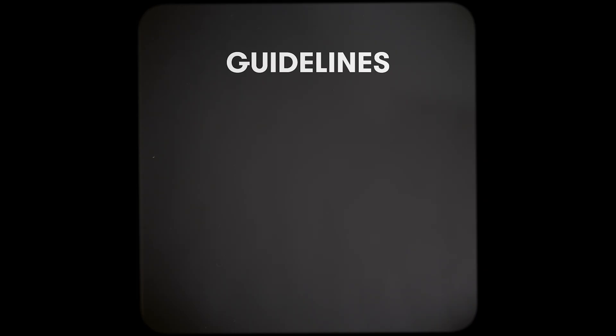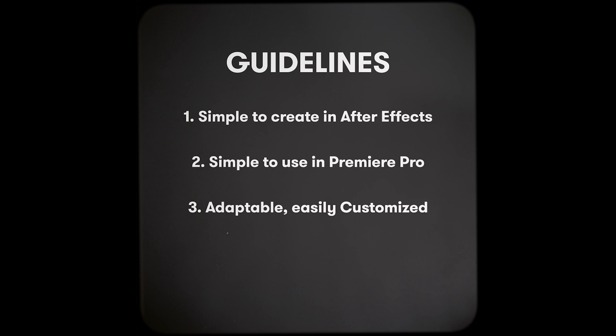Our goal is to have a universal lower thirds template that we can easily reuse for any project. I had four guidelines in place when creating this. First, it needs to be simple to create in After Effects, even for beginners. Next, it needs to be simple to use in Premiere Pro, because if it's not simple, we're probably not going to use it. It needs to be adaptable with some level of customization. And finally, it has to render fast in Premiere Pro. If you've never created a motion graphics template before, or never used After Effects, no worries — we're going to walk through this step by step.